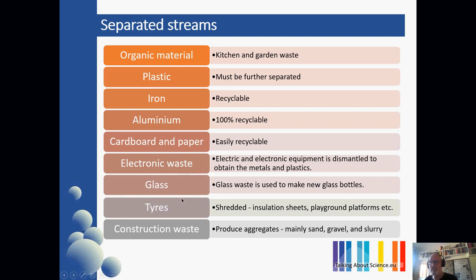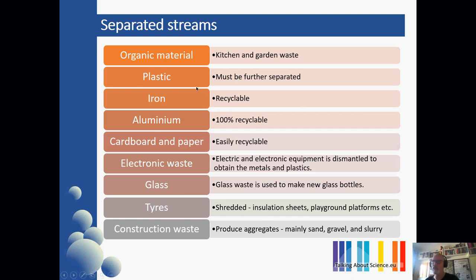Glass is easy. Tires are a problem — typically they get shredded and used. We've all seen kids' playgrounds with a semi-bouncy, springy flooring, which is typically made of recycled shredded tires. And then there's construction waste. Coming back to plastics — the big problem is this: 'plastic' is one word which actually refers to a physical property. You talk about something being plastic, which has now become the generic name for a huge variety of different materials.